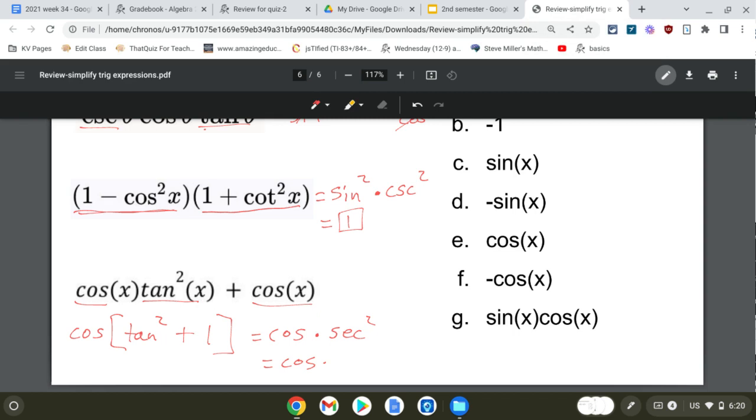This is going to become cosine times 1 over cosine squared. So this cosine cancels with one of those, which leaves me with 1 over cosine. And that is secant, which was not an answer option, but secant's the correct answer.